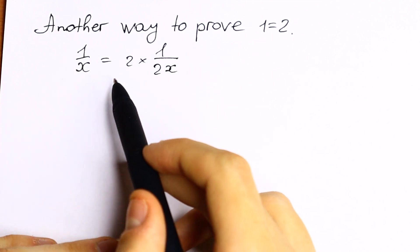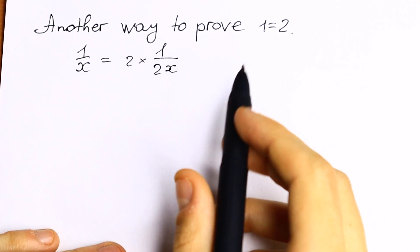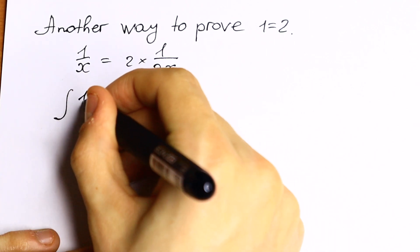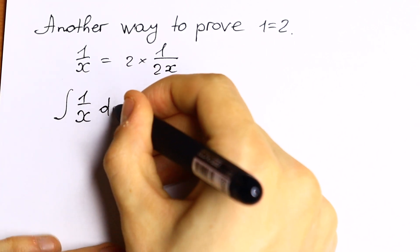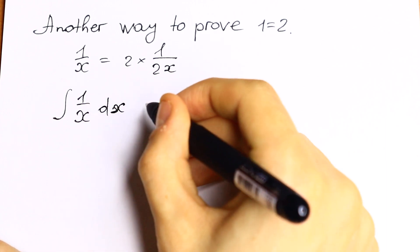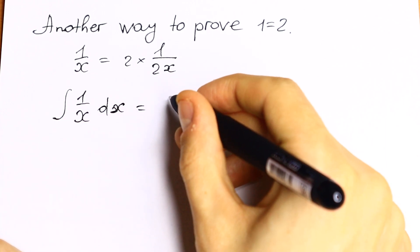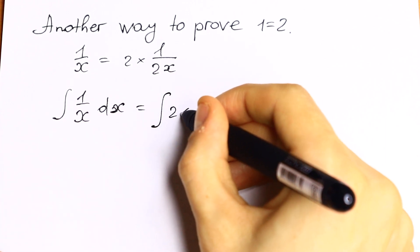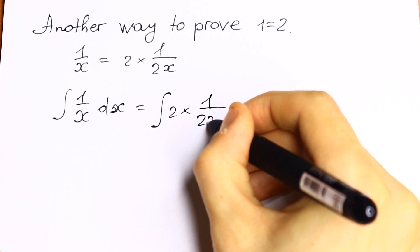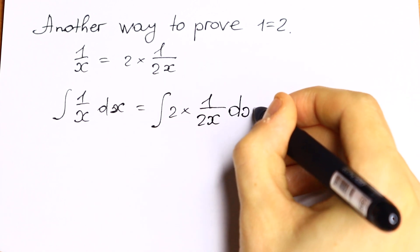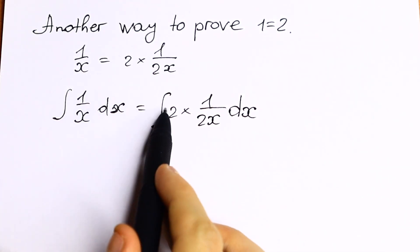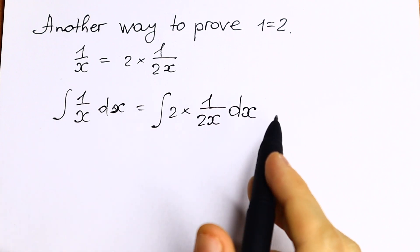We can take the integral of both parts of the equation. So we will have that the integral of 1 over x dx equals the integral of 2 times 1 over 2x dx. Nothing has changed — we just find the integral from both sides.